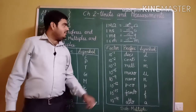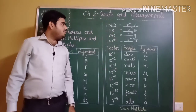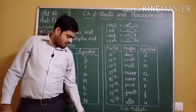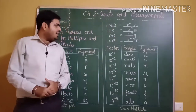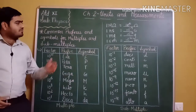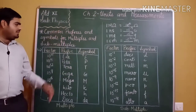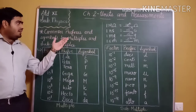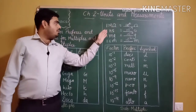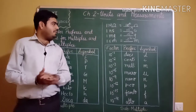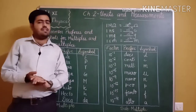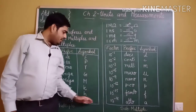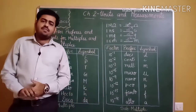To summarize: 1 centimeter equals 10 to the power minus 2 meter; 1 milligram equals 10 to the power minus 3 gram; 1 nanosecond equals 10 to the power minus 9 second; 1 mega ohm equals 10 to the power 6 ohm. This is how we use these symbols to convert between units using the multiple and submultiple table.